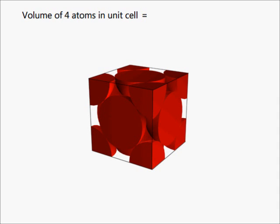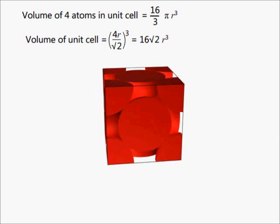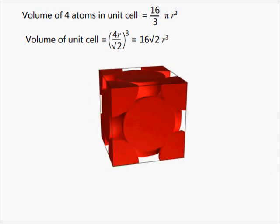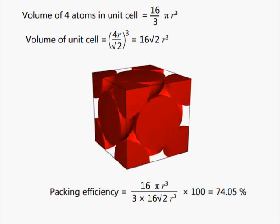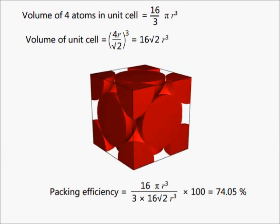Volume of these 4 atoms is equal to 16/3 π r³. Let the edge length of the cube be x. The face diagonal is √2 × x, and the face diagonal is also equal to 4r. Therefore x = 4r / √2. Therefore, volume of unit cell is equal to 16√2 r³. Therefore, packing efficiency is equal to 74.05%.